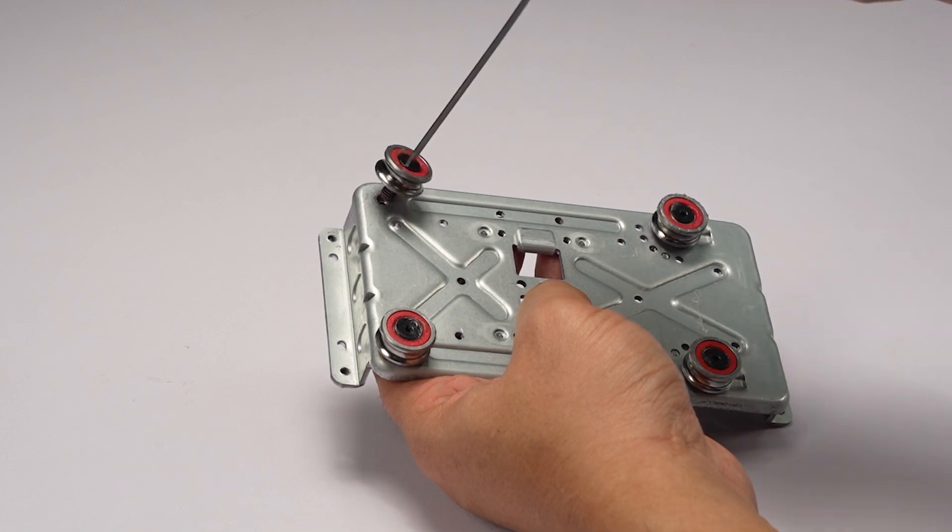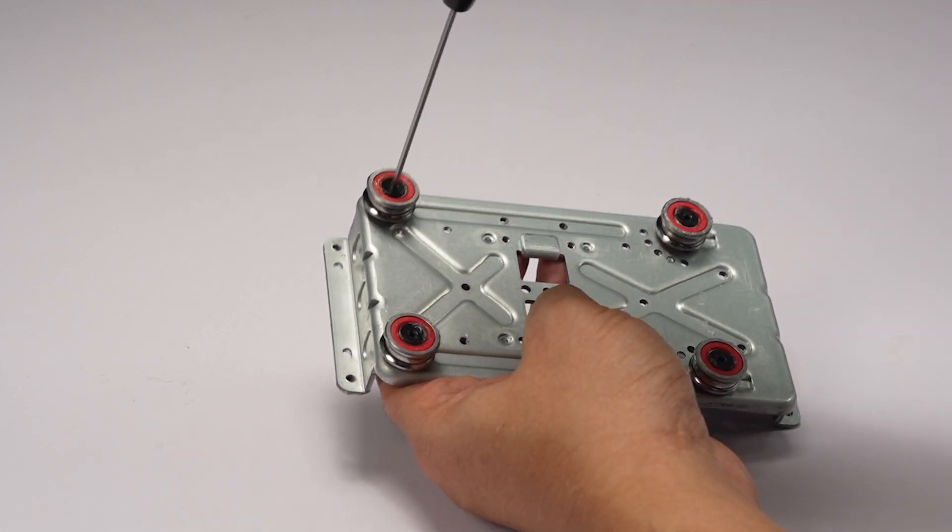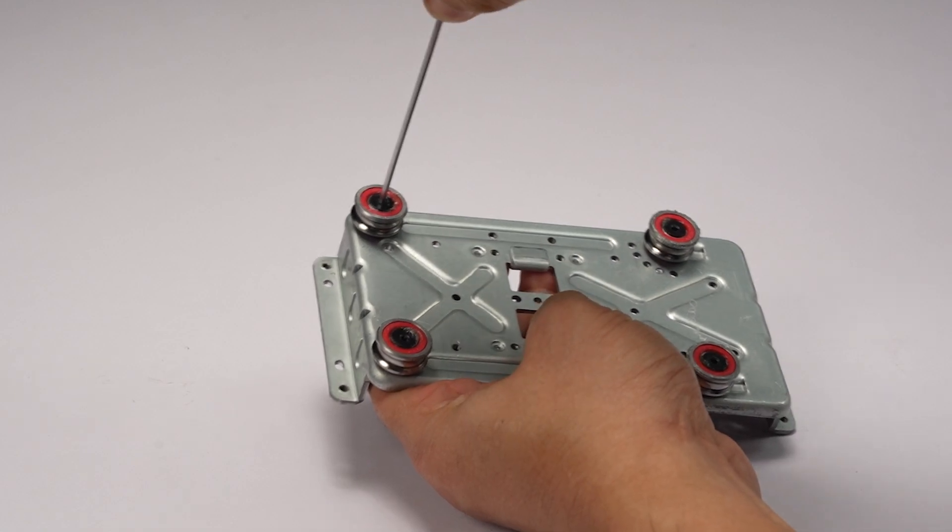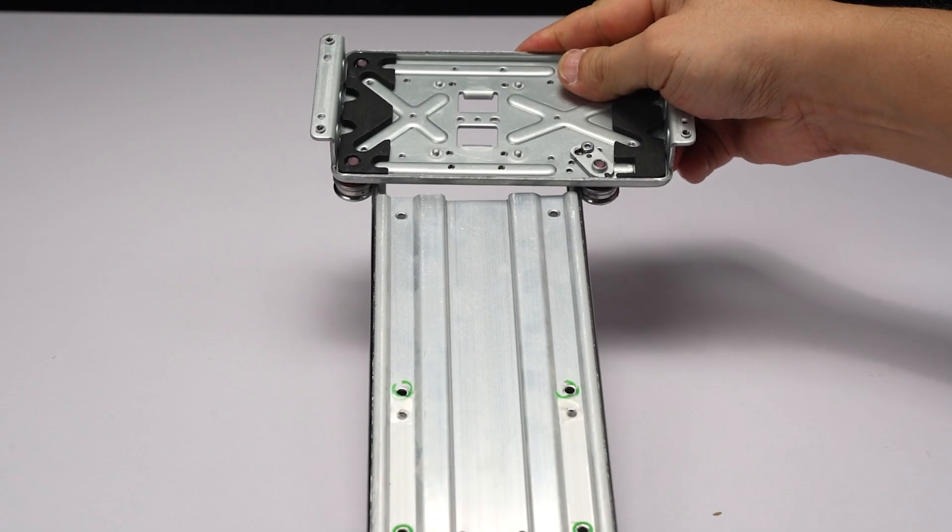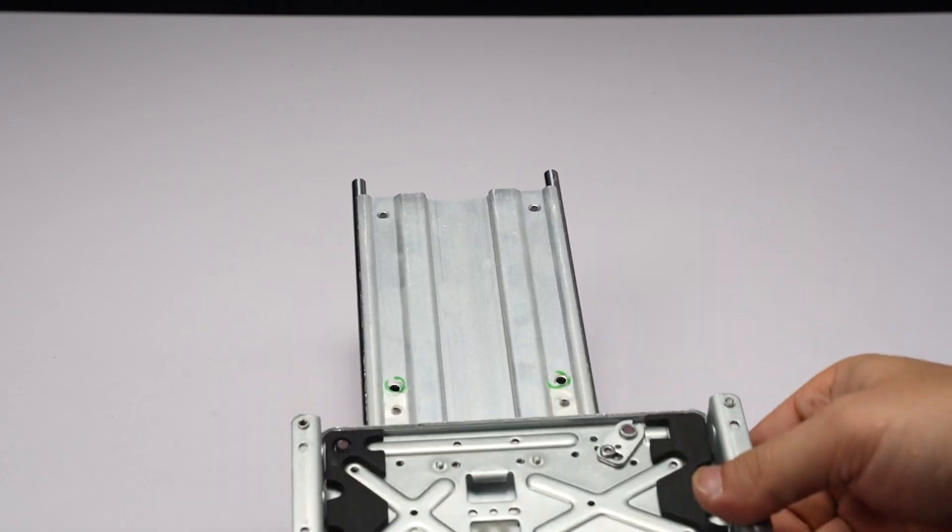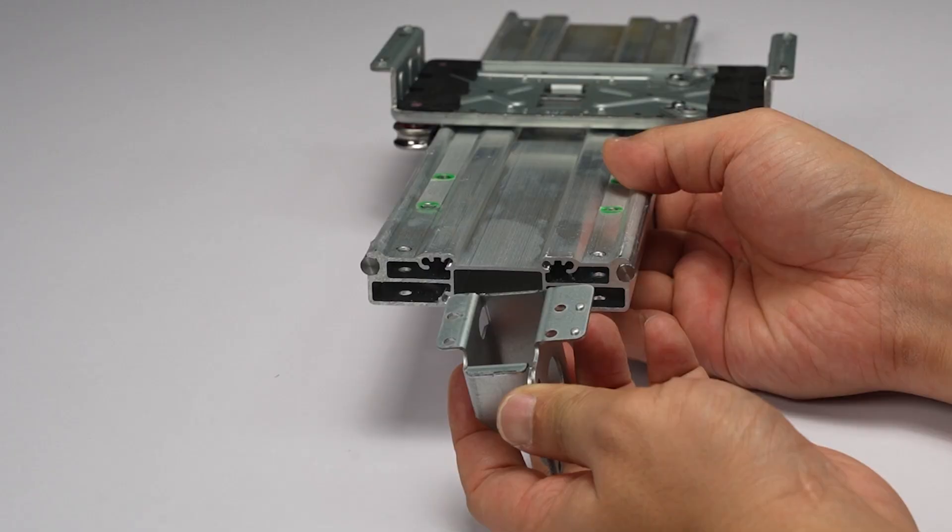Install the Y axis track bearing under the heat bed bracket and tighten the screws. The method of installing the Y axis track bearing is the same. Install the heat bed bracket onto the Y axis linear rail. You need to check the installation direction.